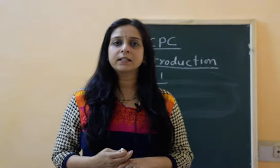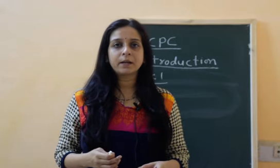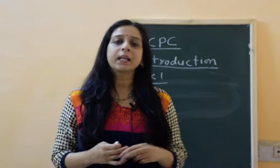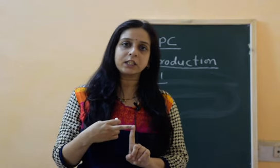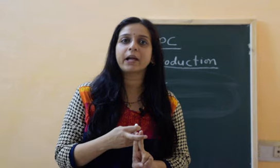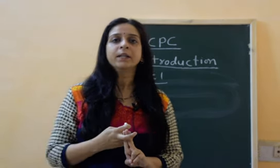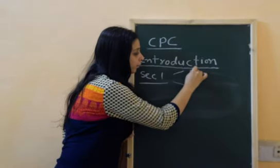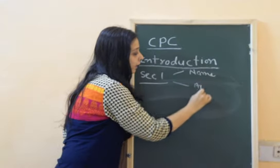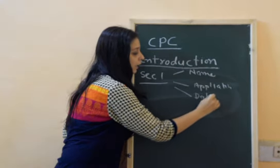The Civil Procedure Code will be known as the Civil Procedure Code 1908. The date of commencement is 1st January 1909. The second part: it is applicable all over India except Jammu and Kashmir, certain areas of Nagaland, and tribal areas — specifically the tribal areas of Assam. So there are two important things in this section: one, the name of the act; and second, the application.